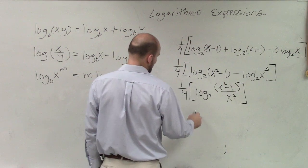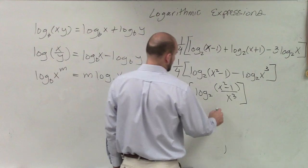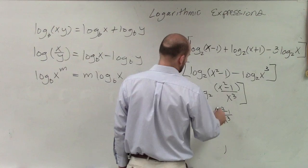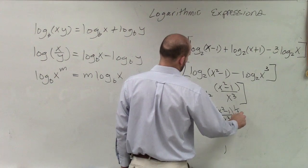So therefore, now we write this as log base 2 of x squared minus 1 divided by x cubed raised to the 1/4th.